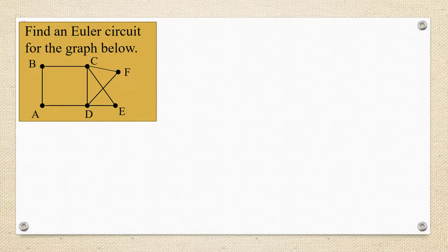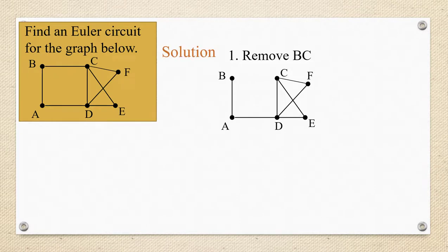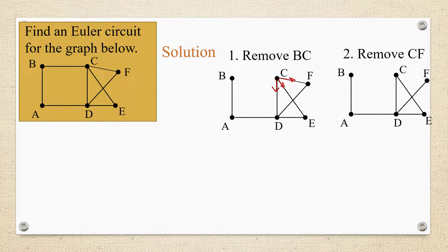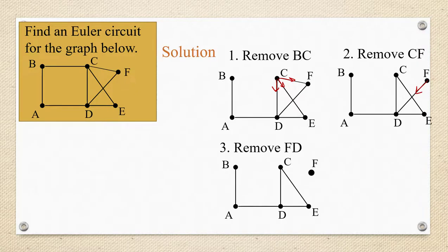I'm going to start by removing the edge BC. So that puts me at vertex C. So now from vertex C I have three options. I can go towards F or E or D. So I chose to go towards F. So now I've removed CF and now I'm at vertex F and I have to go to D from vertex F. So I've removed FD and now from D I can either go to A or to C or to E.